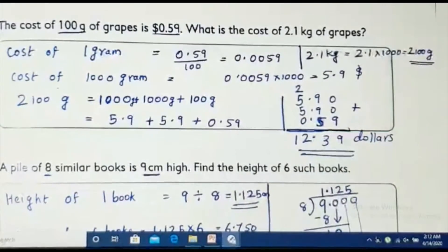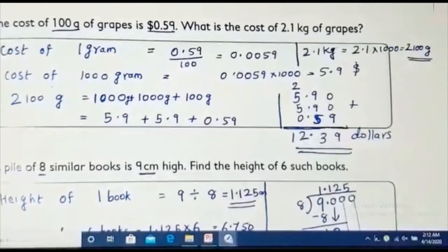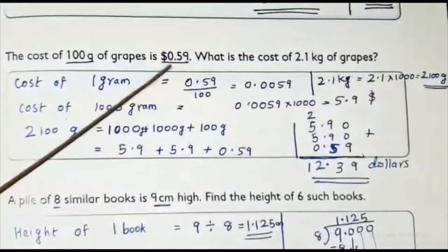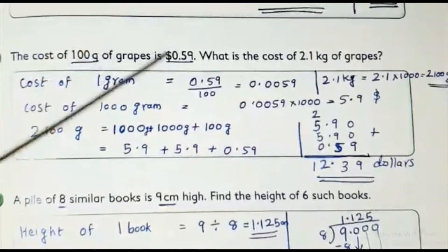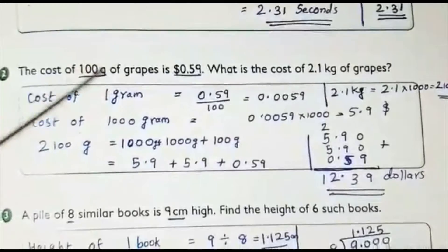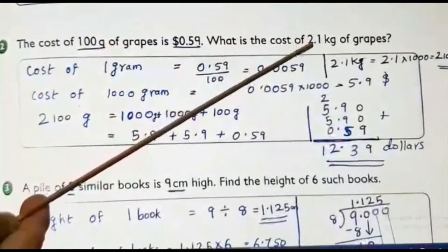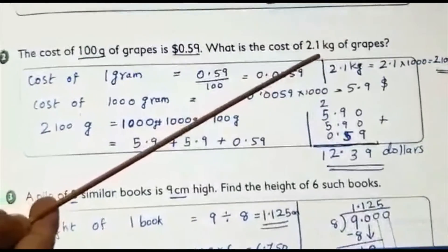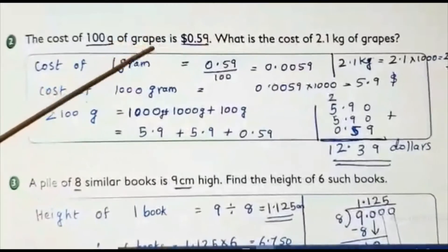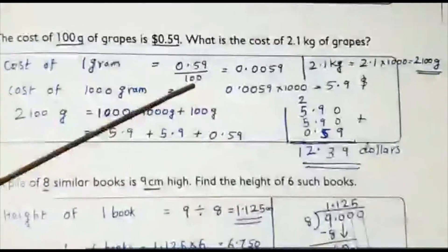What is the cost of 1 chocolate? How we will do? 900 baisa divided by 8. Then it will be more than 100 baisa per chocolate. Like that, we are doing the same thing here. 0.59 is the cost of 100 gram of grapes. That divided by 100 will give you the cost of 1 gram. Why I am finding 1 gram? Because if I am getting for 1 gram, it is very easy for me to find out 2.1 kg. First I will convert this kilogram also to gram. Then I will just multiply by the cost of 1 gram.